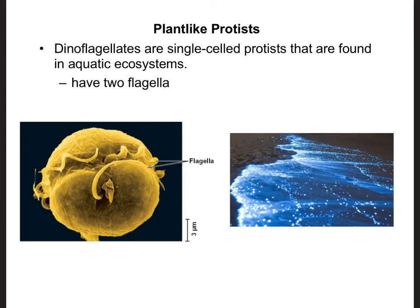There are several different types of plant-like protists, and one example is called a dinoflagellate. These are single-celled protists found in aquatic ecosystems. They have two flagella, or tails, that they use to whip themselves through the water — the word flagellate actually means to whip. You're probably most familiar with the flagella found on a sperm cell. The dino part of dinoflagellate refers to two, because these guys have two flagella that allow them to propel themselves through the water.